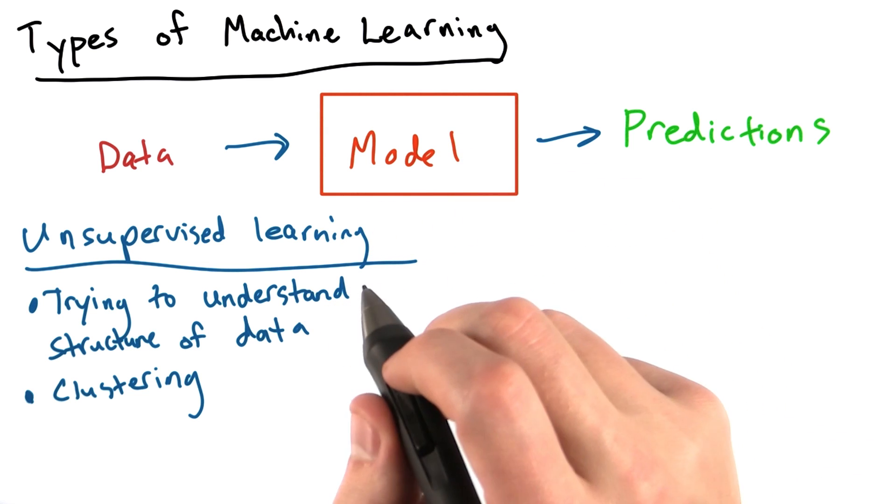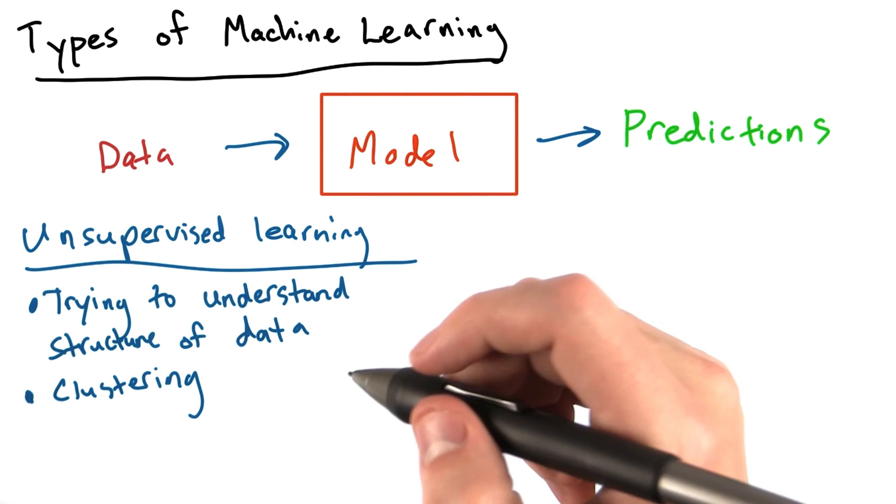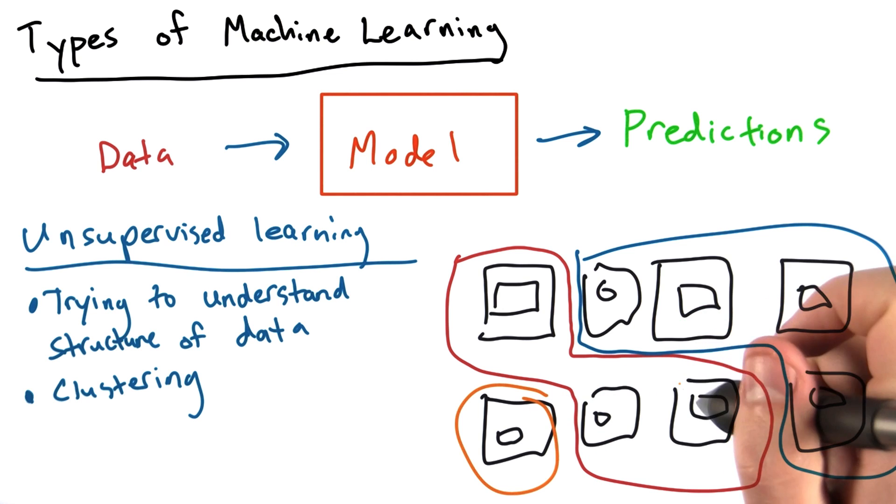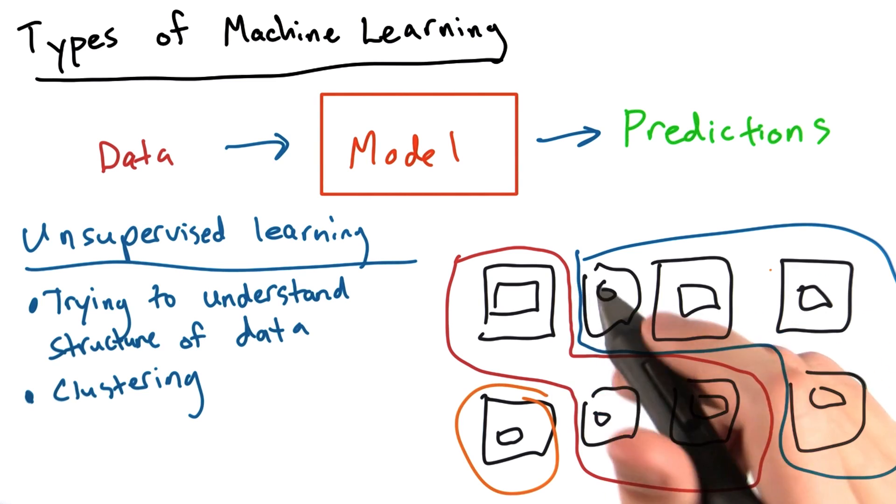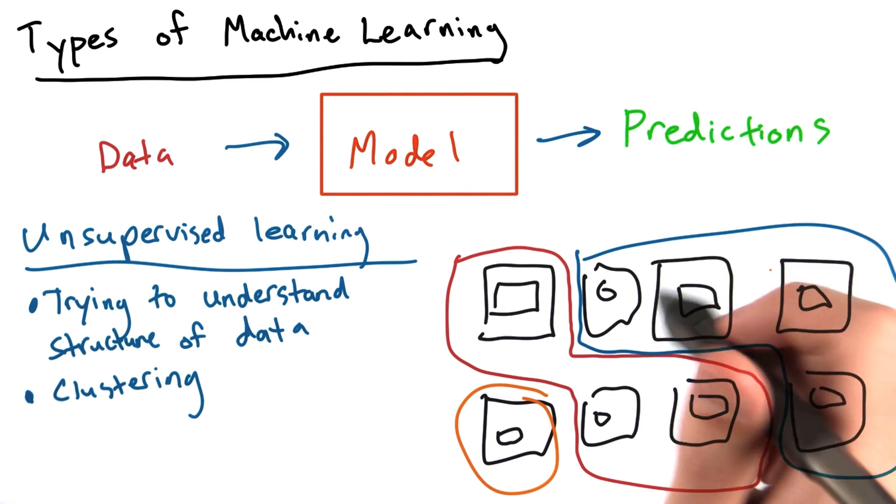For example, if we were to feed an unsupervised learning algorithm a bunch of photos, it might split the photos into groups. Say photos of people, photos of horses, photos of buildings, without being told a priori what those groups should be. It might not know that the groups are people or horses or buildings, but it can tell that these distinct groups exist.